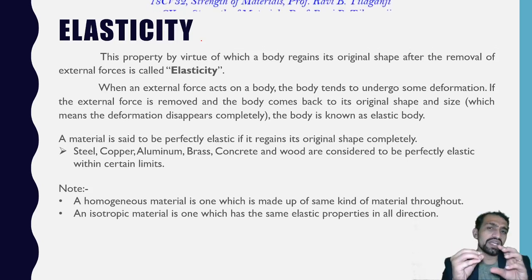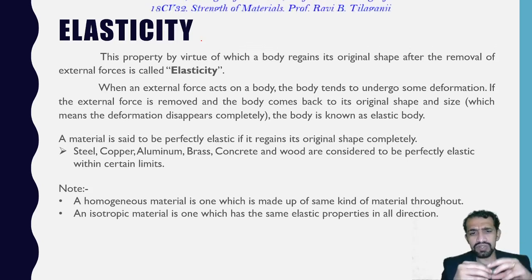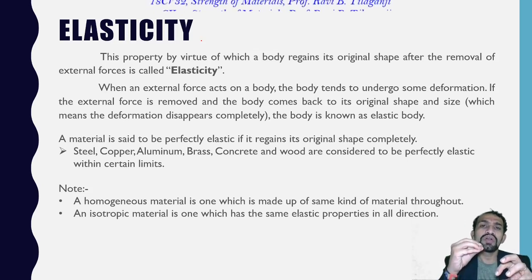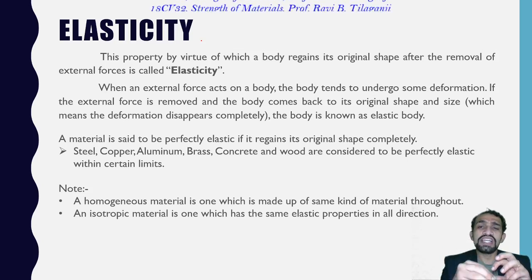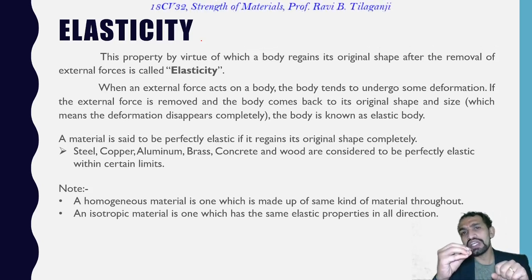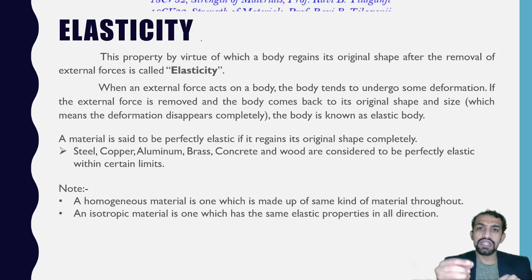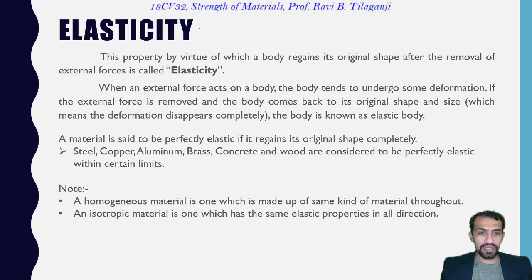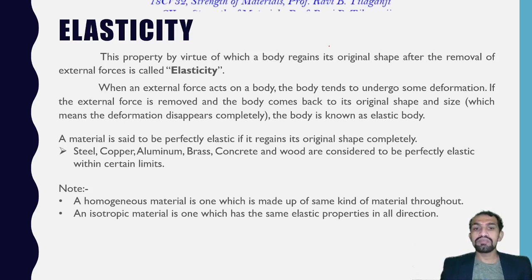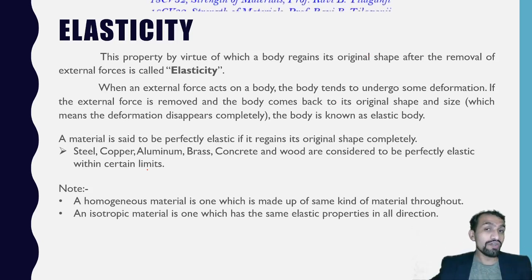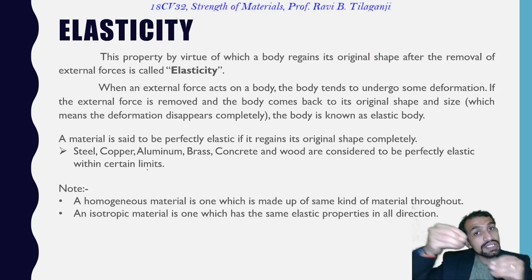So let us consider a material which is said to be a very elastic material — one which can easily regain its shape and size completely. These include steel, copper, aluminium, brass, concrete, and wood. These are considered to be perfectly elastic within certain limits — not beyond a certain limit, but within a certain limit.